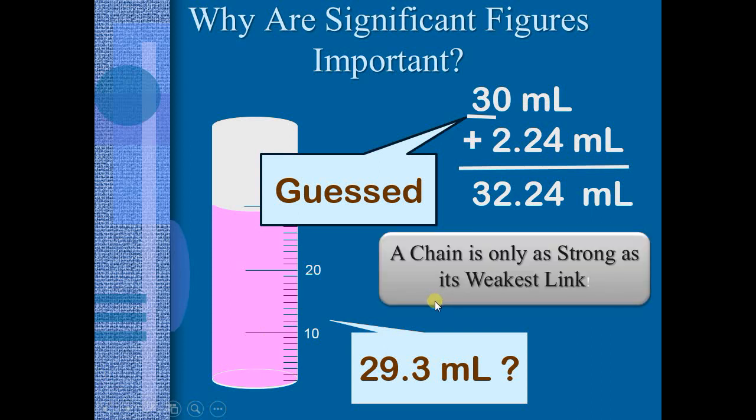So, again, bottom line is, when we're doing calculations with measurements, our motto is that a chain is only as strong as its weakest link. We can have some very, very exact measurements, like that 2.24. But if I'm adding a measurement that has a lot of guessing to it, like 30, my final answer can't be any more exact as my weakest link. So about the best I can do here is say, this 30 milliliters plus 2.24, because of my guessing in the 30, I can say I'm going to have about 30 milliliters when I add them all together.